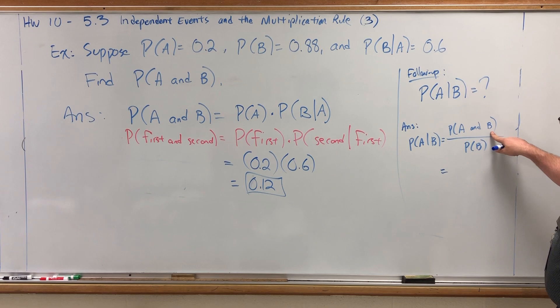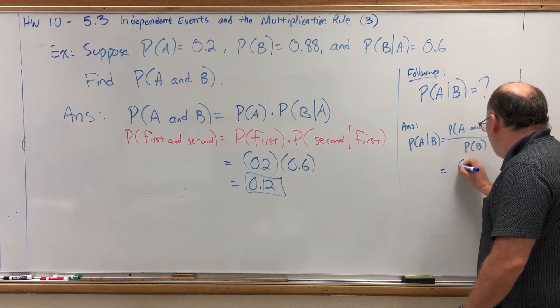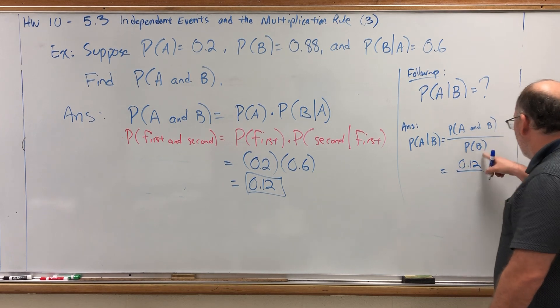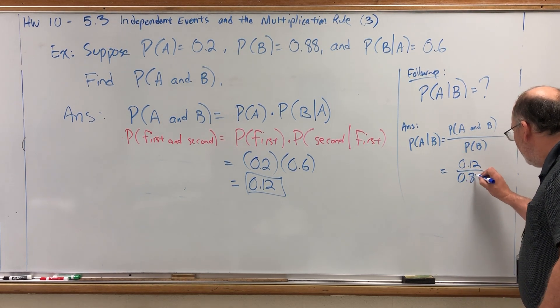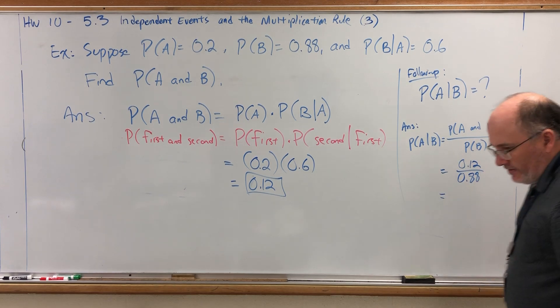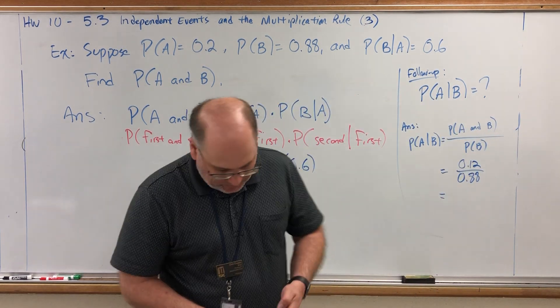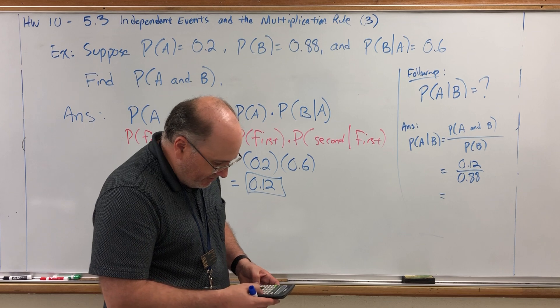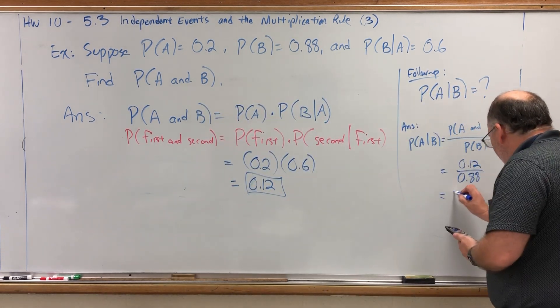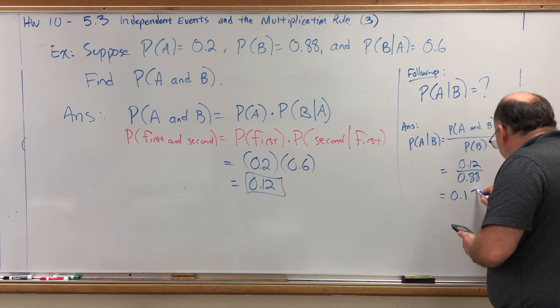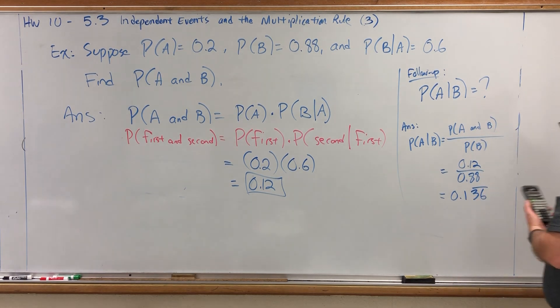Well, we calculated the probability of A and B. It was 12%. We were given the probability of B, which we didn't need. It was 88%, and that won't divide evenly. So I'll just divide it into a calculator.